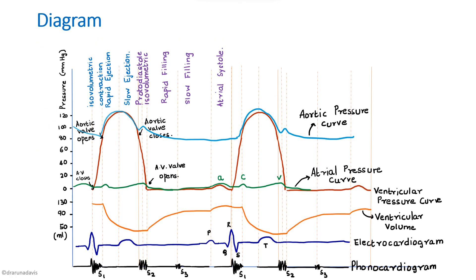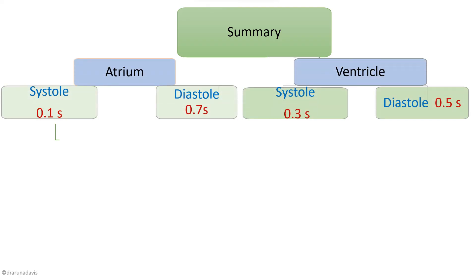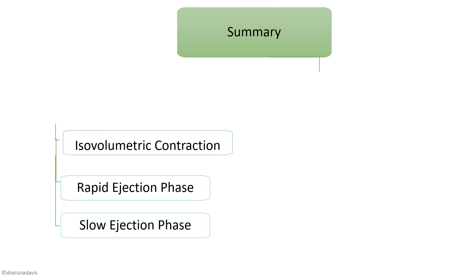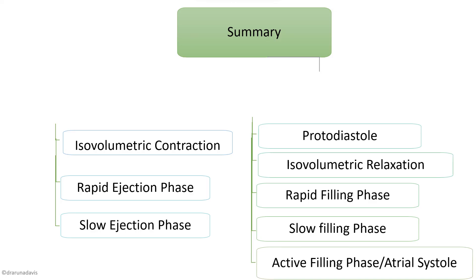Finally, you can draw the Wiggers diagram, which shows different pressure and volume changes of the cardiac cycle, including all heart sounds and the electrocardiogram. To summarize, we discussed atrial systole, ventricular systole and diastole, and all their phases: isovolumetric contraction, rapid ejection, slow ejection, protodiastole, isovolumetric relaxation, rapid filling, slow filling, and active filling coinciding with atrial systole.